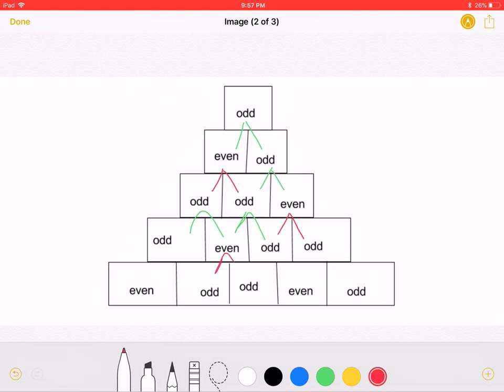This even is equal to the sum of two odds, while the odds are equal to the sum of an odd and an even.